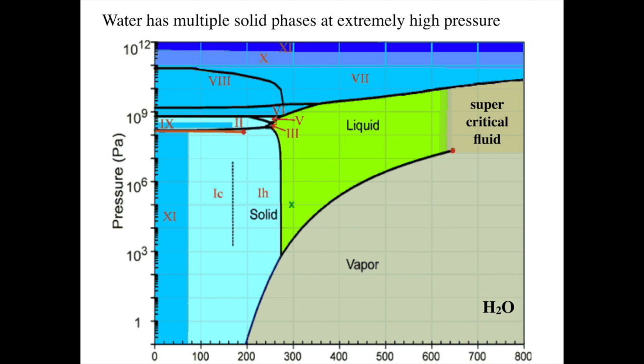Here is an expanded phase diagram for water. And in addition to our usual phase diagram with the solid, liquid, vapor, and supercritical fluid, we have several different types of solid ice labeled with Roman numerals here. So we have solid ice type 8, for instance, or 6. And these are all different solid phases, just as diamond and graphite are solid phases of carbon.